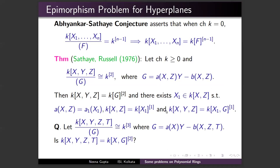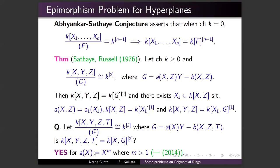We can ask this in four variables: if g is a polynomial in four variables defining an affine 3-space, does it follow that g is a coordinate? At least in the special case where g is linear in y, I could handle the case where a(x) = x^m for m > 1, as an application of my study of the cancellation problem. No complete result has been obtained for n = 3.